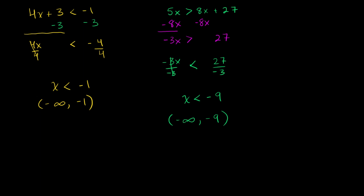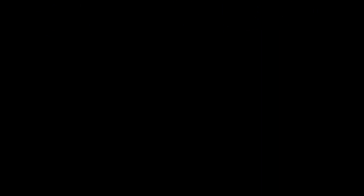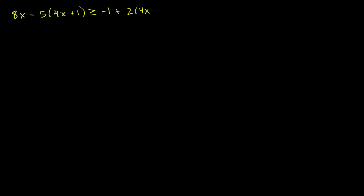On a number line, negative 9 is here, negative 8 here, negative 10 there. You start at negative 9, not including it because we don't have an equal sign, and go all the way down to negative infinity. Let's do a nice hairy problem. Let's say we have 8x minus 5 times (4x plus 1) is greater than or equal to negative 1 plus 2 times (4x minus 3).